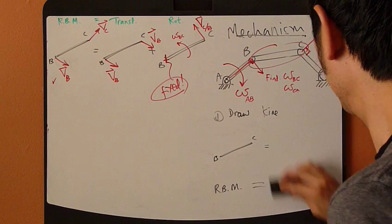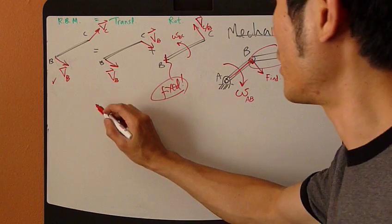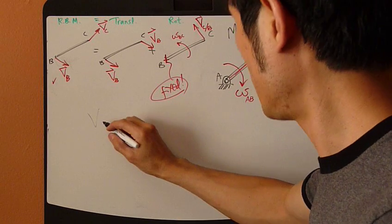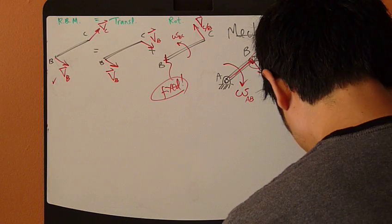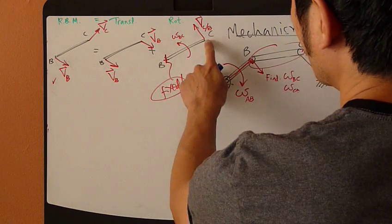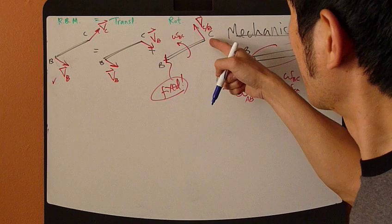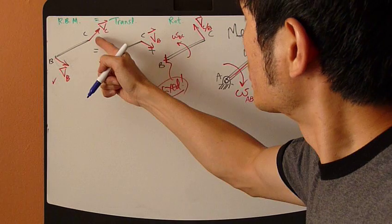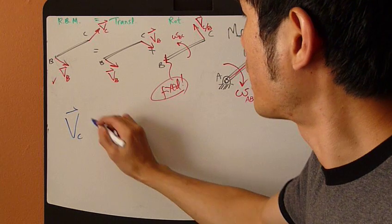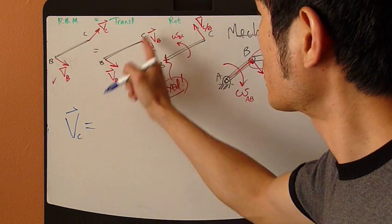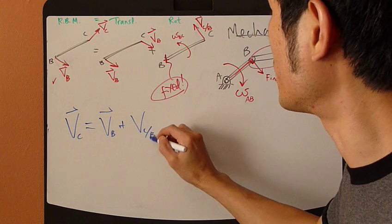The kinematic diagram - next step, just write down the equation for this. Point C is of particular interest here, so just write down the vectors of kinematic diagram. So VC vector equals...